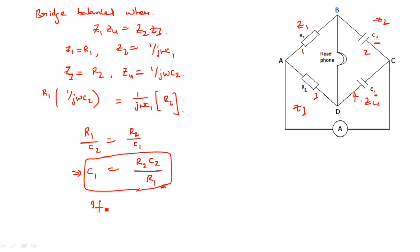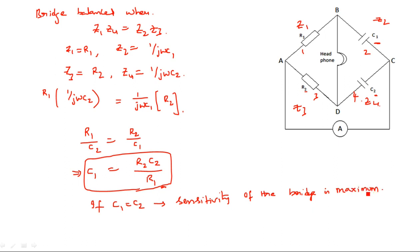If C1 equals C2, the sensitivity of the bridge is maximum. Maximum sensitivity is obtained when the capacitor values are equal, putting the bridge in a proper balanced condition. For accurate measurements, we must use air capacitors as the dielectric medium. If any lossy dielectric material is used instead of air, the bridge will not balance well. This concludes the De Sauty Bridge, a special bridge for capacitance measurement.